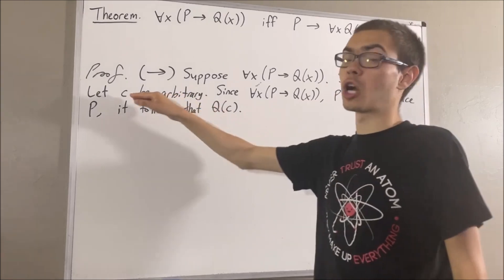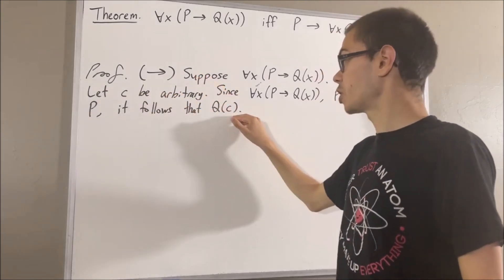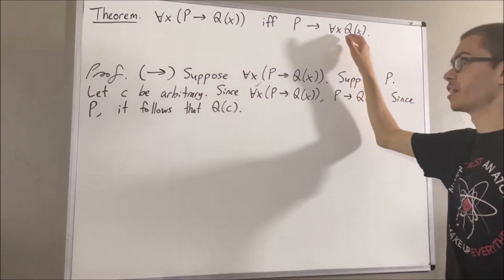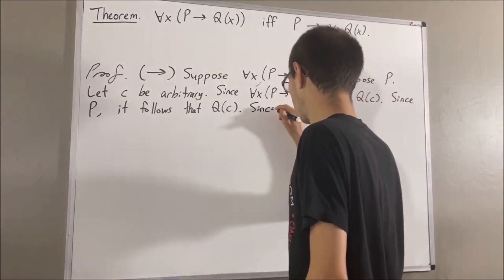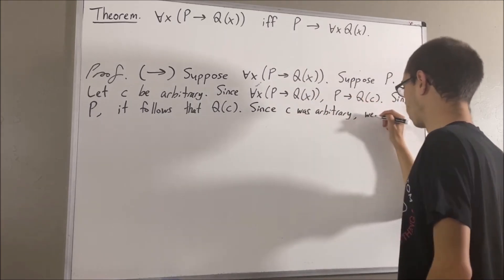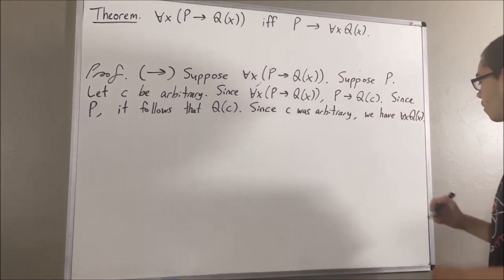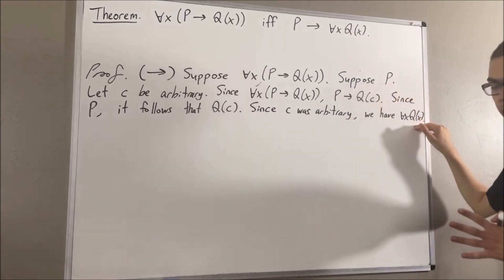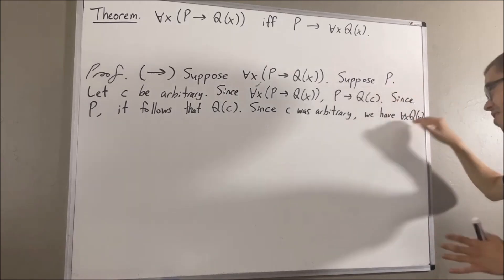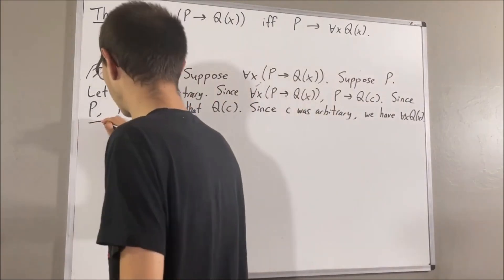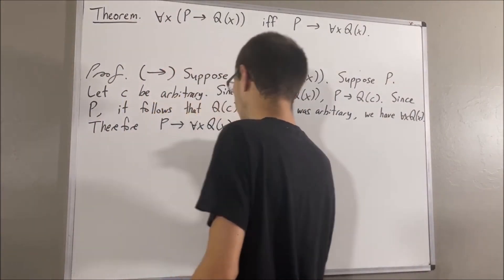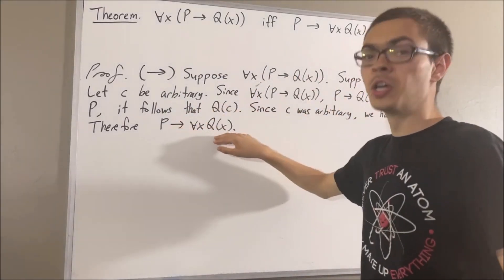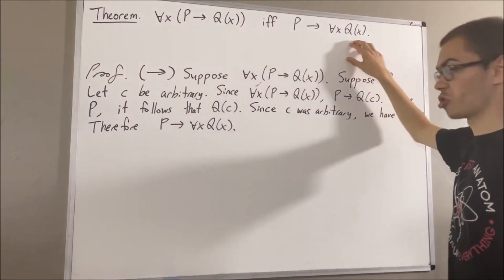And c was an arbitrary object, so Q of c is true no matter what c is. Therefore, we have shown for all x, Q of x. So under the assumption P is true, we have for all x, Q of x. Therefore, if P is true, then for all x, Q of x. And so under the assumption the left side is true, we have shown the right side is true — completing the first direction.